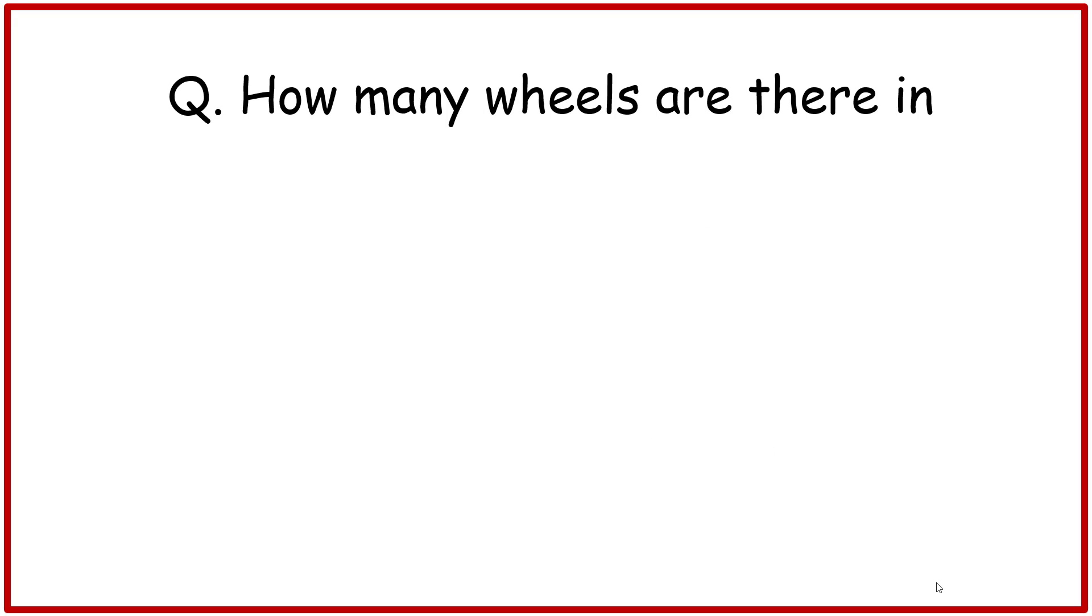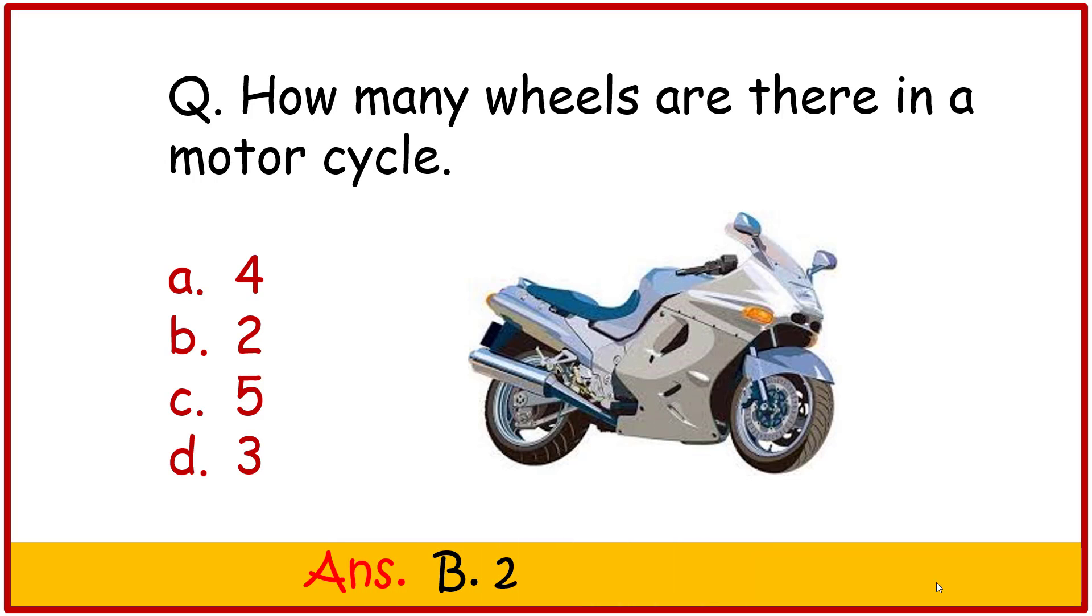Question. How many wheels are there in a motorcycle? A 4, B 2, C 5, D 3. Correct answer is B 2. Friends, there are two wheels in a motorcycle.